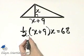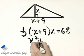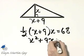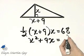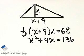Two times this side, the fraction is gone, but I'll have x times x, or x squared, plus 9x is equal to—don't forget—68 times 2, and 68 times 2 is 136.